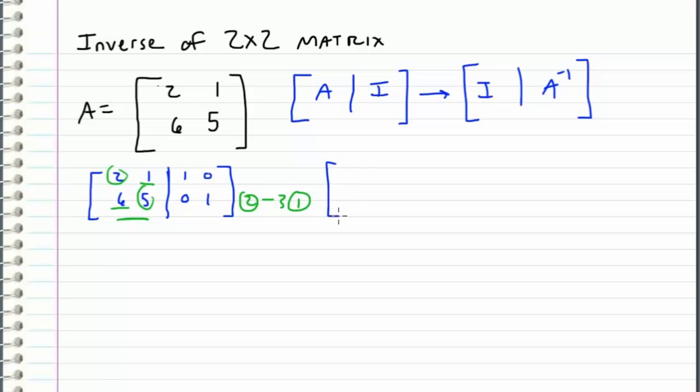So what I'm left with is a row equivalent matrix of 2, 1, 1, 0. And then 6 minus 3 times 2 is 0 and 5 minus 3 times 1 is 2. And then on the right side of the bar we have 0 minus 3 which is negative 3 and 1 minus 0 is 1.